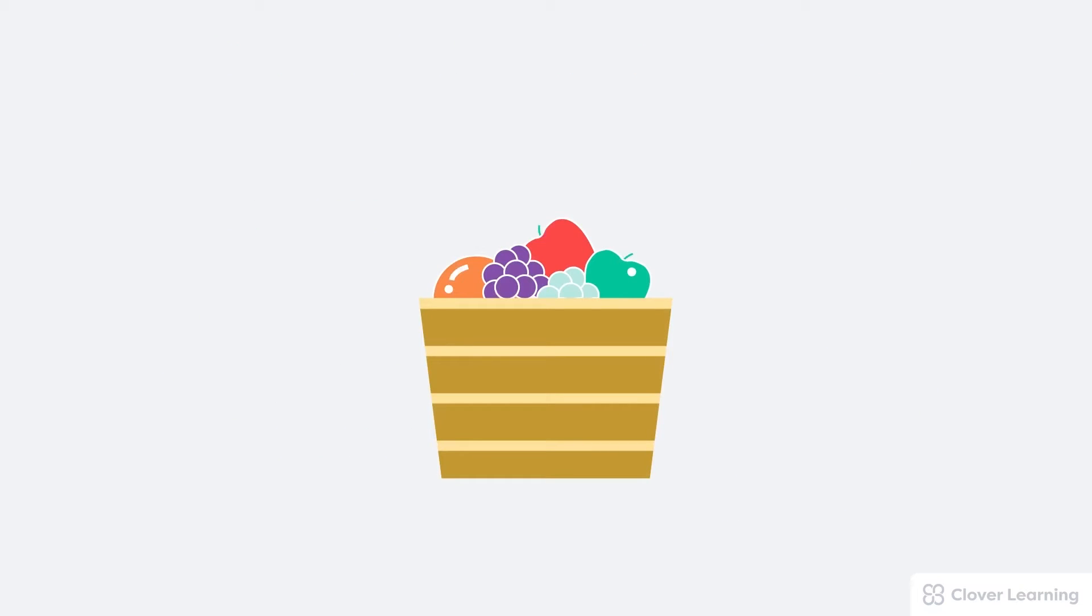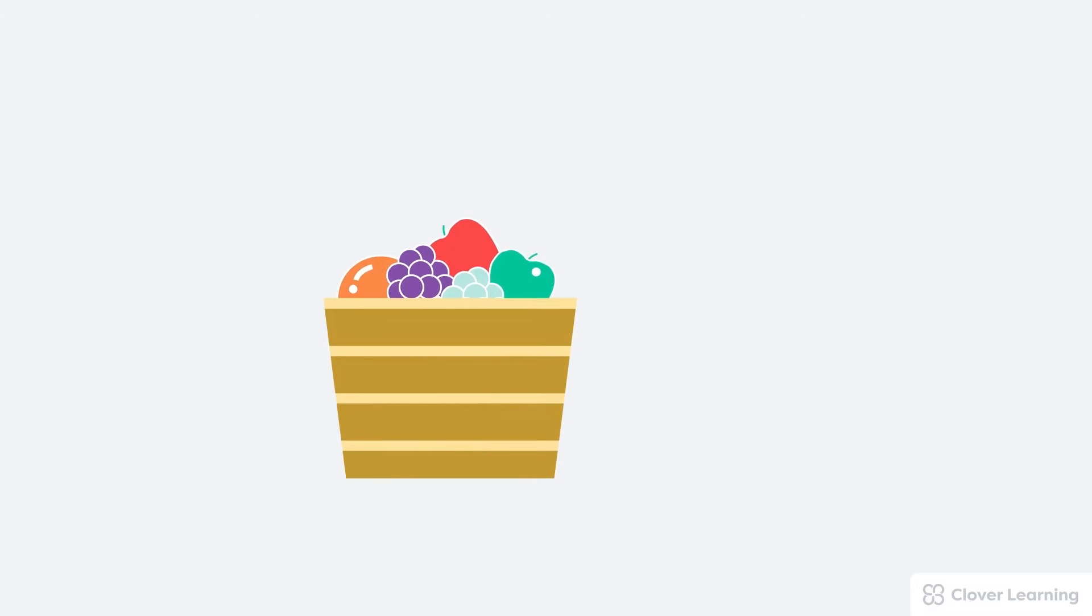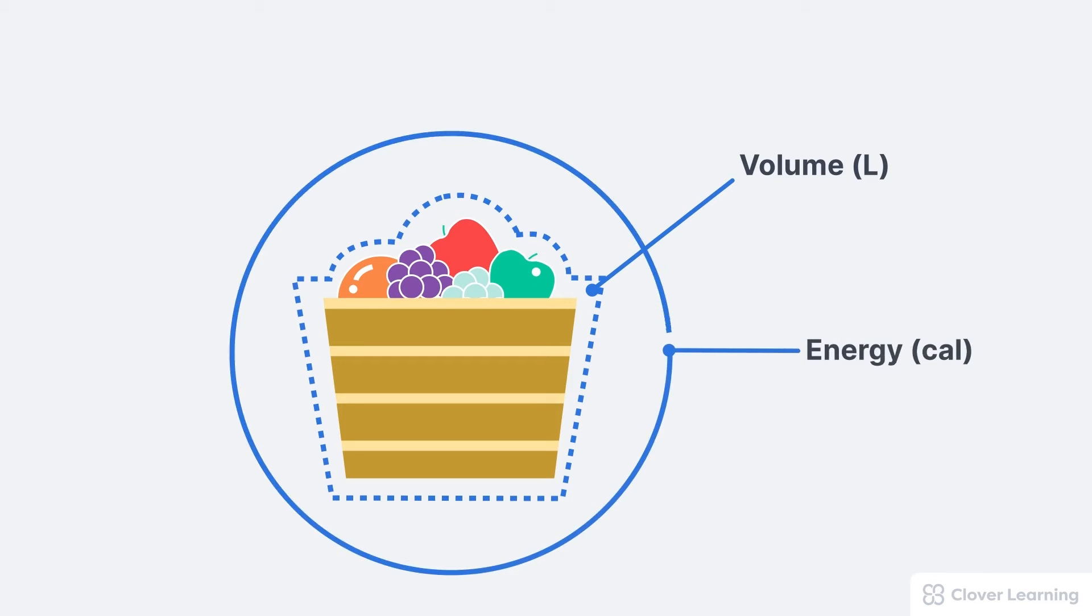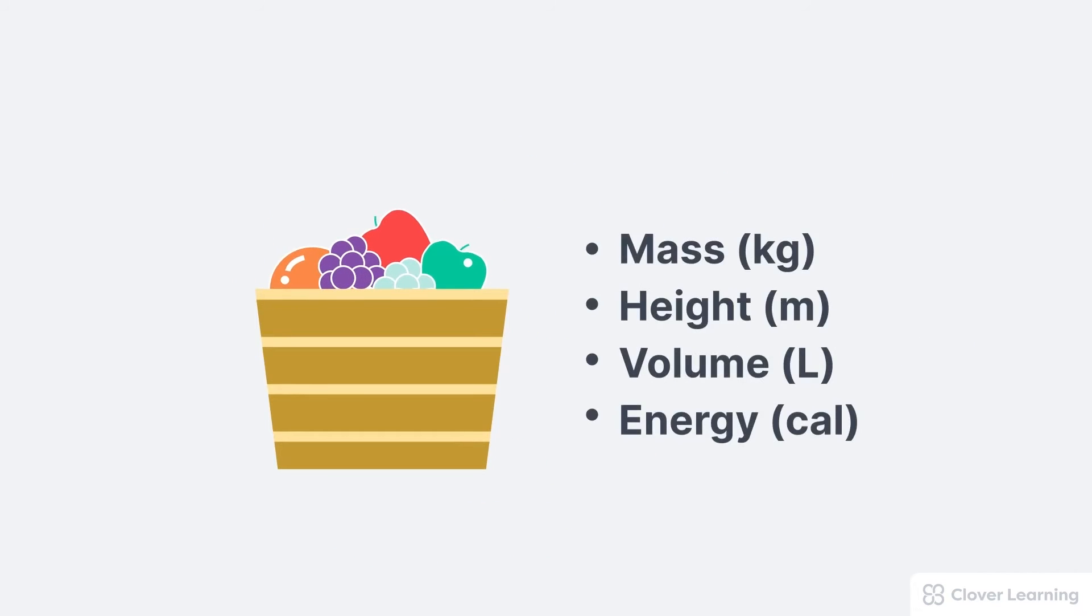You could think of it like this. There's several ways that you could measure this basket of fruit. You could measure the mass in kilograms, but you could also measure the height in meters, the volume in liters, or even the total energy of this fruit basket in calories. All of these measurements are definitely related to each other in some ways, but they're also obviously very different in other ways. The units and quantities used to measure radiation are just like this.